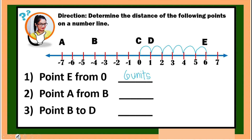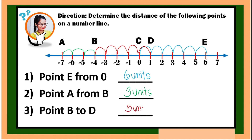For number two, point A from B — we start from B until we reach point A, counting: one, two, three — three units. Then from B to another point: one, two, three, four, five — five units. Notice that we are not writing if it's positive or negative, because we are just counting the distance.